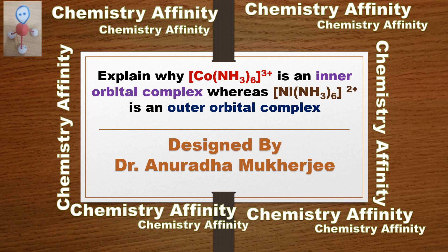I am going to explain a problem which is based on coordination chemistry. Explain why [Co(NH3)6]3+ is an inner orbital complex whereas [Ni(NH3)6]2+ is an outer orbital complex.